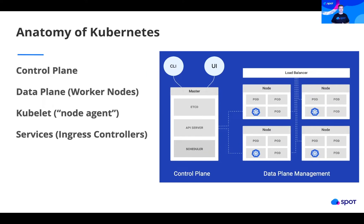This is the part of the cluster that has one, three, maybe five instances. It doesn't scale very large, but it's extremely important to running the entire cluster, which has all of the worker nodes in it. Now we'll talk about the data plane, which is the part that you see on the right. This has all the nodes or VMs associated with it, and on these VMs is where all the pods are run.